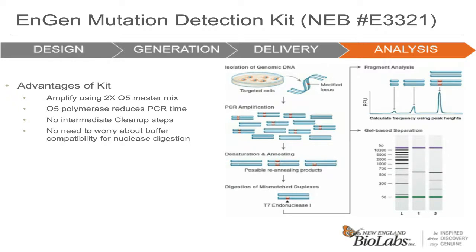Another important feature of this kit is the included positive control mix. The control mix is a mixture of two pUC19 plasmids that vary in size by a 10-base pair insertion. When amplified together using the same primer set and subjected to denature and annealing conditions, they will form heteroduplexes. This control will show you that your PCR regions are working and also that your T7 endonuclease is working — a nice peace of mind to have when doing gene editing experiments.